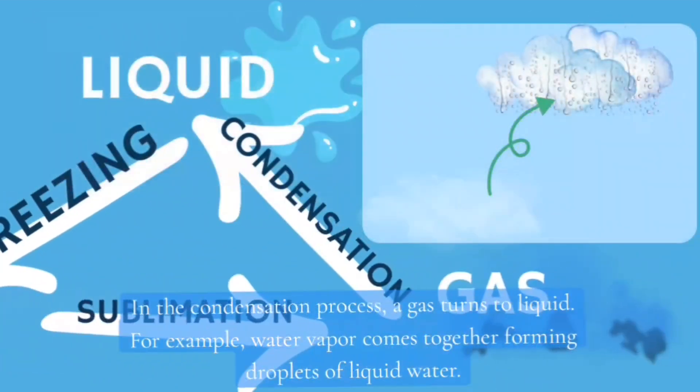In the condensation process, a gas turns to liquid. For example, water vapor comes together forming droplets of liquid water.